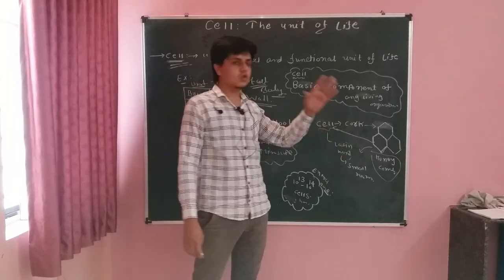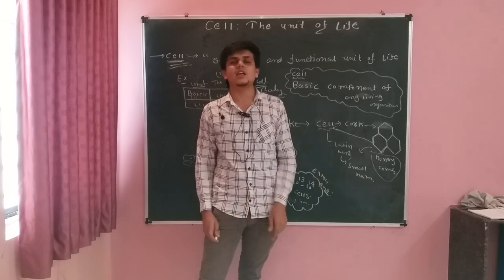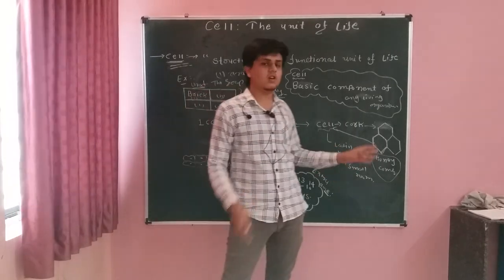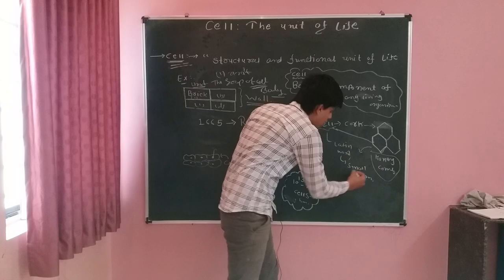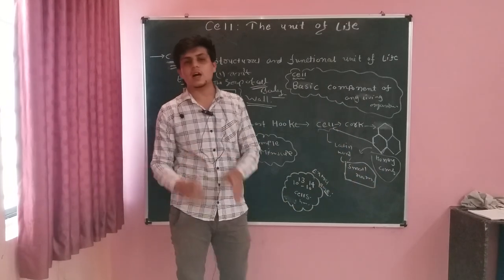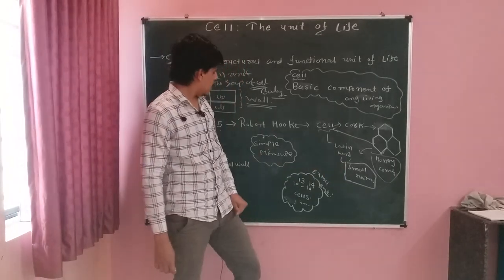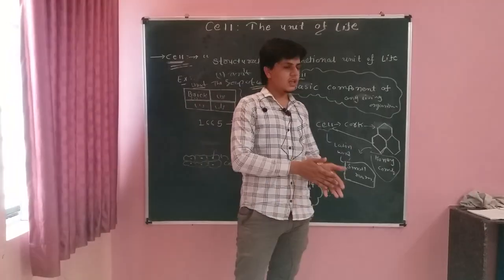Ab cell, ab usne kahan se word uthaya? Cell is a latin word. Ab latin word, latin word cell ka matlab hai a small room. Lab, ek chhota sa kamara. Small or a little room. Wo latin word hai. Ab yeh to ho gaya.